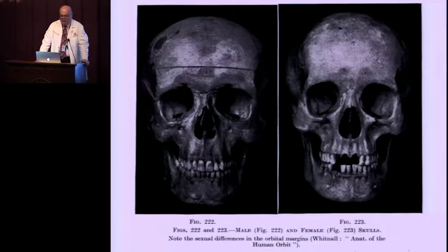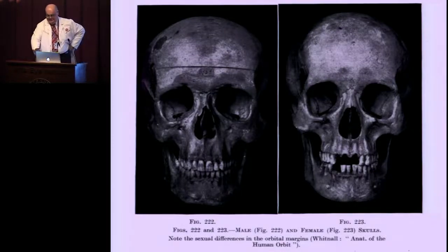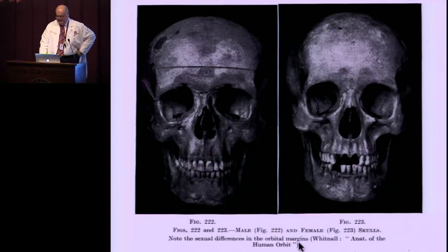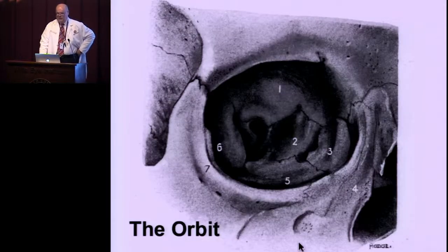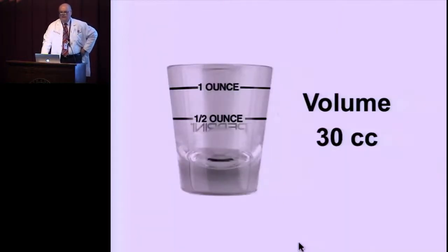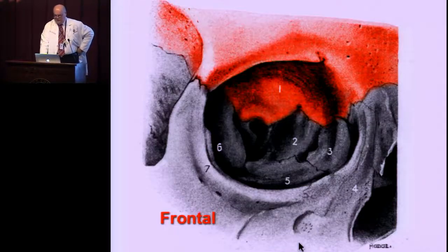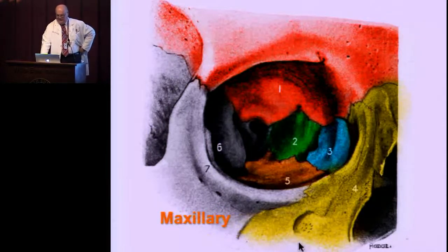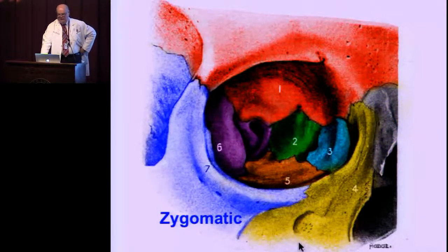Let's talk about the diseases of the orbit. This supposedly shows the sexual differences in the orbital margins. The orbit is the hole in the skull that contains the eye and surrounding adnexal tissues. It has a pear shape with a volume of about 30 cc — the same as a shot glass. The orbital bones include the frontal bone, the ethmoid, lacrimal, frontal process of the maxillary bone, sphenoid, and the zygomatic.